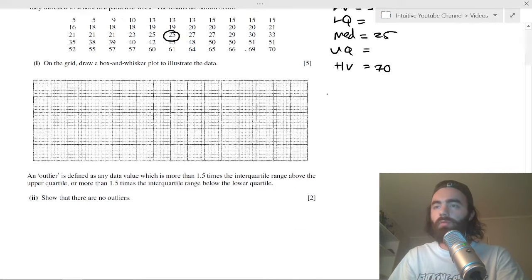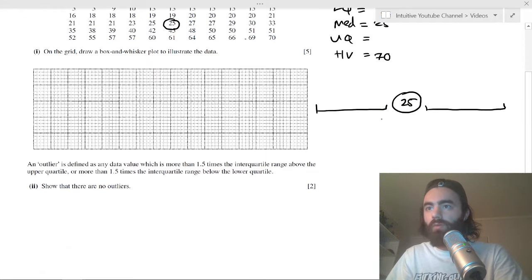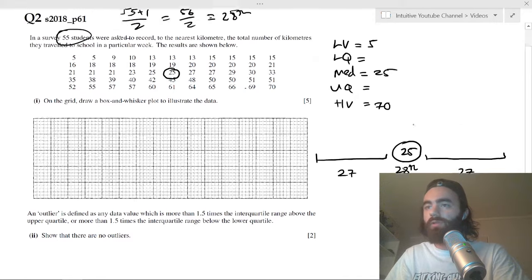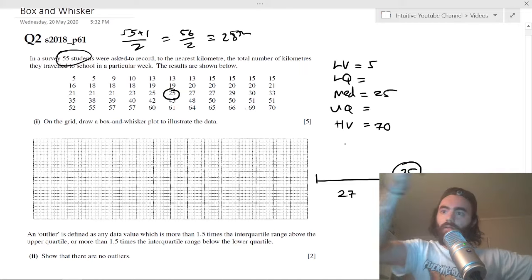The lower quartile and upper quartile: you've got your median at the 28th point, which means you've got 27 data points on either side. The lower quartile is the median of the lower 27 points, and the upper quartile is the median of the upper data set.